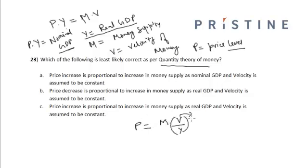So if I assume that velocity and real GDP both are constant, then the increase in price will be proportional to the increase in money supply, or the increase in money supply will be reflected to a corresponding change or proportional change in the price.